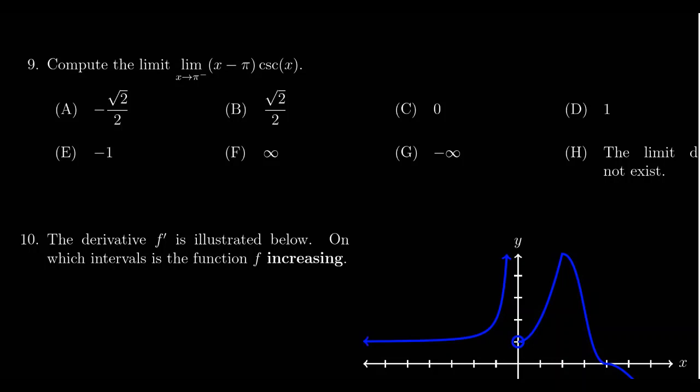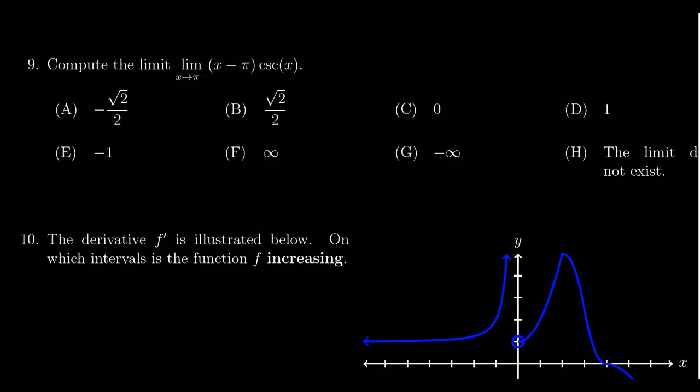In this video we provide the solution to question number nine for practice exam number four for Math 1210. We're asked to compute the limit as x approaches pi from the left of x minus pi times cosecant of x.